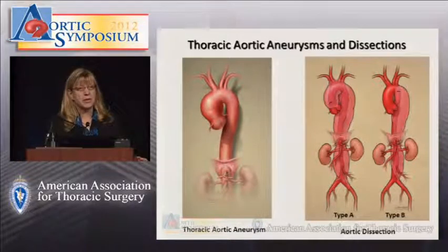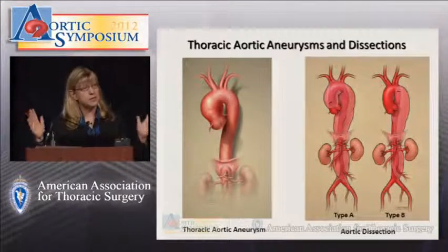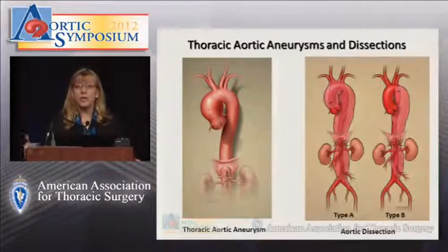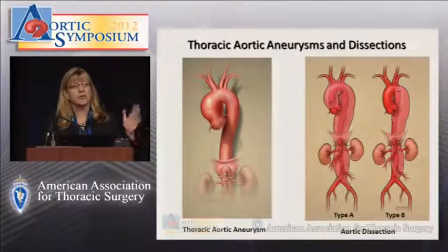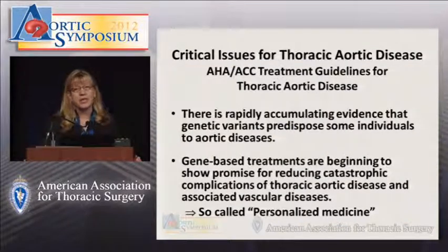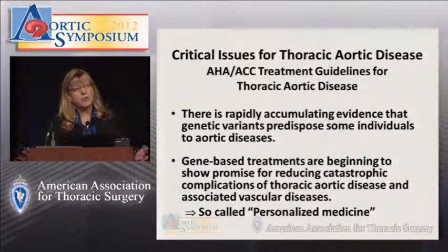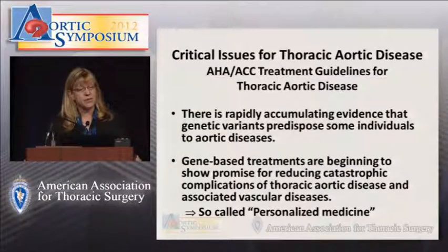What I'm talking about are genes that predispose to ascending aneurysms that lead to type A dissections and also type B dissections. There seems to be a spectrum of disease presentation for single gene disorders — mutations in single genes. We know that very well from Marfan syndrome, because a Marfan patient can present with an aneurysm, a type A dissection, or a type B dissection.